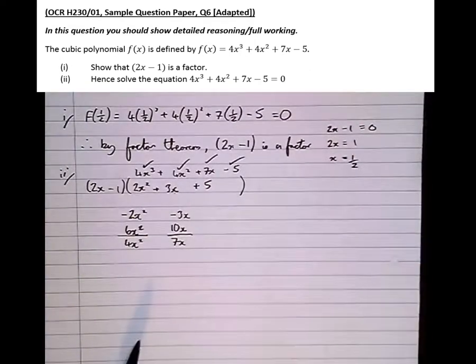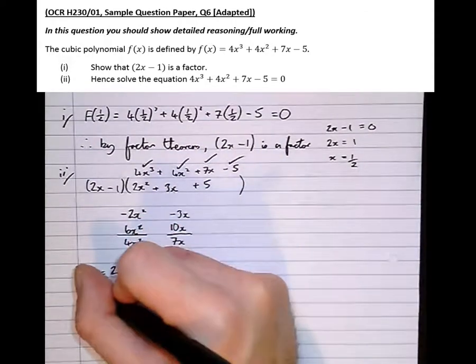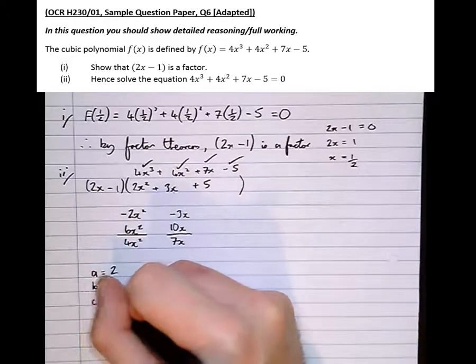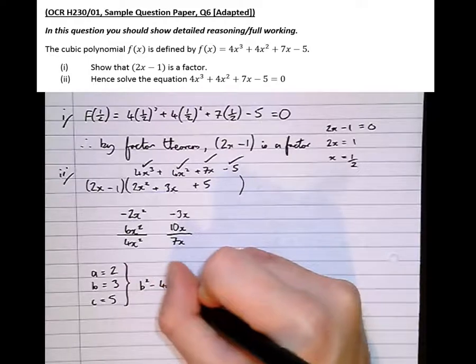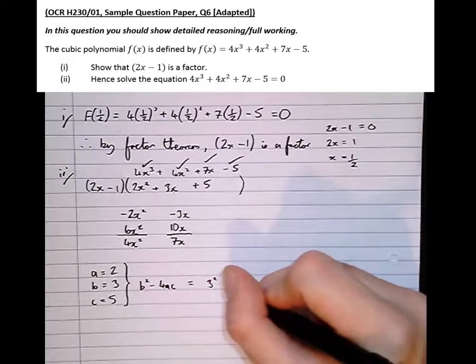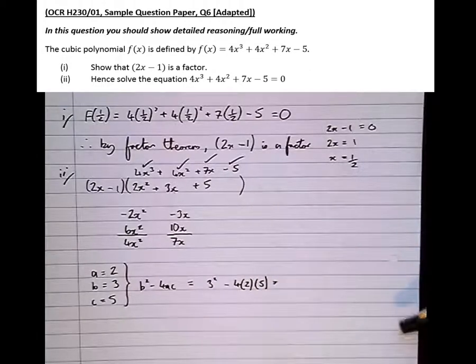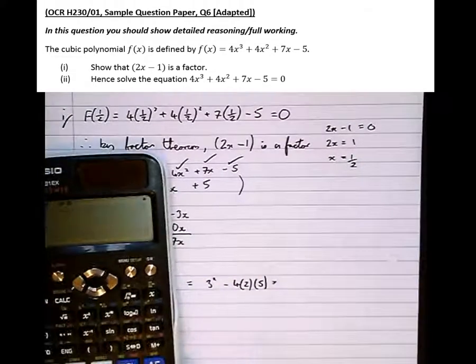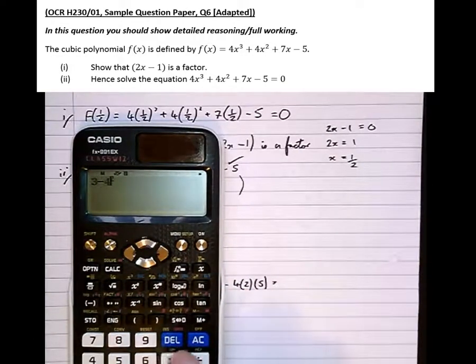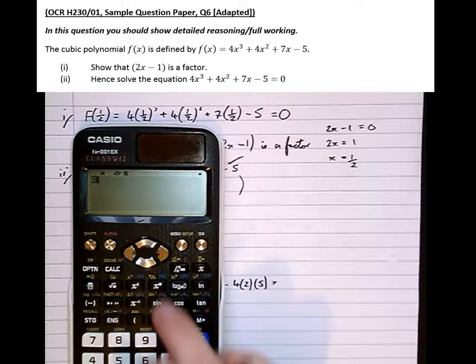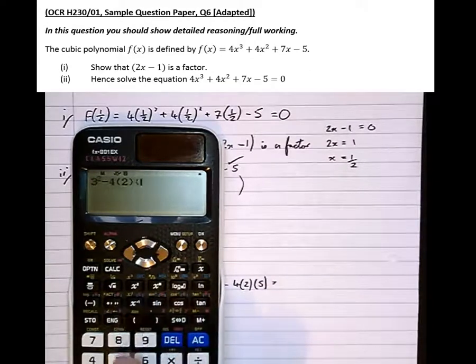So, the best way to show that on paper is saying a equals 2 using the discriminant b equals 3, c equals 5. Which means that b squared minus 4ac equals 3 squared minus 4ac, which equals 3 squared minus 4 times 2 times 5.